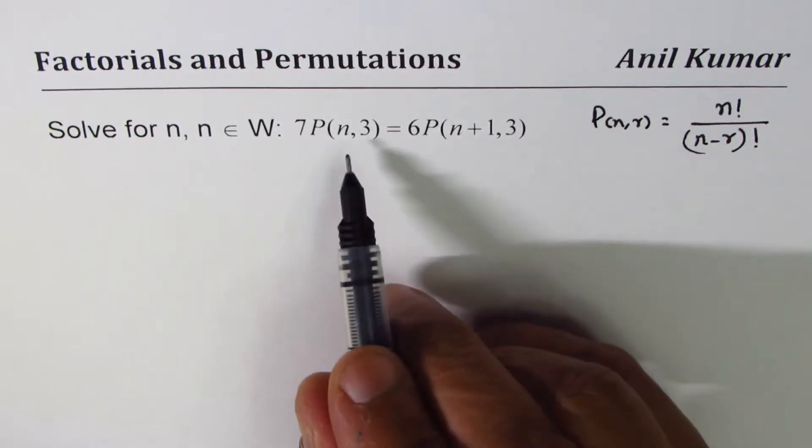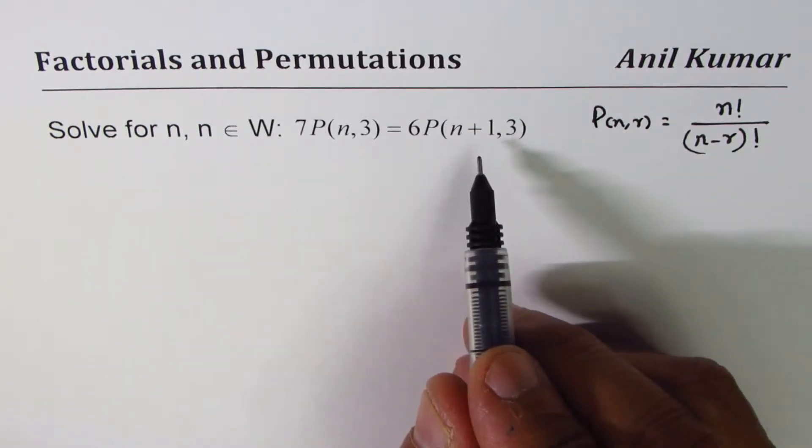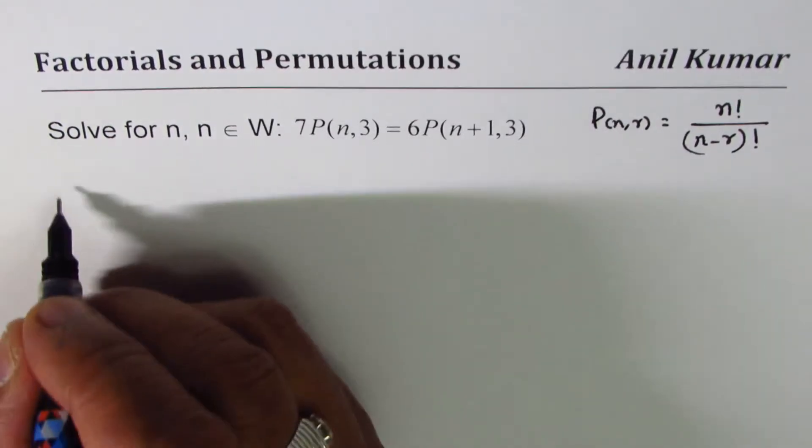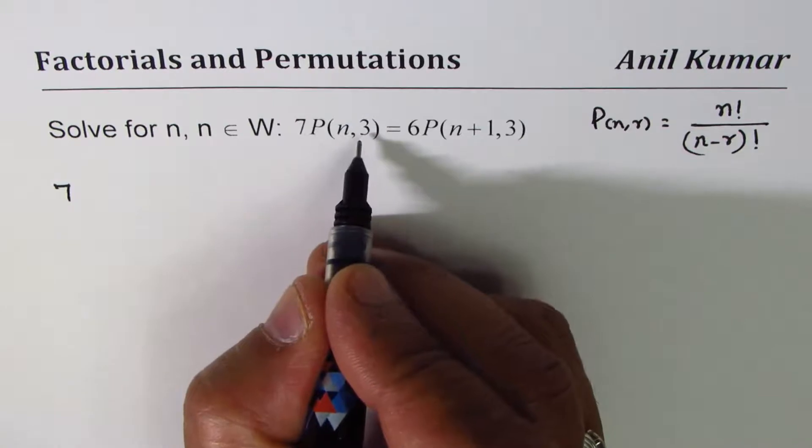Now here we have 7P(n,3), which means 7 times n factorial divided by (n minus 3) factorial.